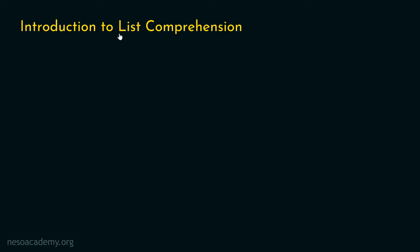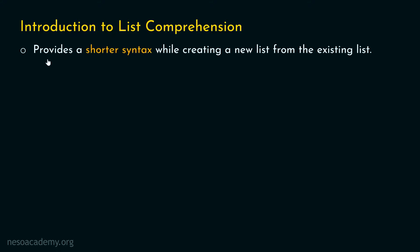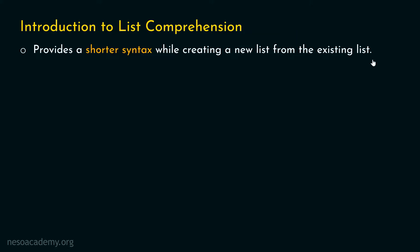What is the meaning of list comprehension? List comprehension provides a shorter syntax while creating a new list from an existing list. It is all about creating a new list from the existing list based on certain conditions, but with much shorter syntax compared to the traditional way of doing this. Let's understand this with an example.